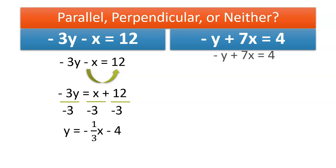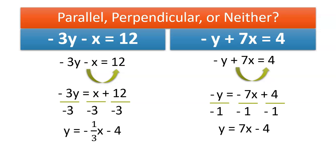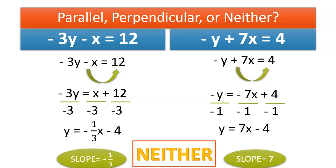On the other side, we pull our x to the other side of the equation. And we have a negative y, which is a negative 1. Don't forget that invisible 1. So let's divide by negative 1 all the way through because we cannot have a negative y in slope intercept form. And you'll notice here, our slope is negative 1/3 and our slope is 7. Therefore, these lines are neither. The slopes aren't the same and the slopes aren't opposite reciprocals.